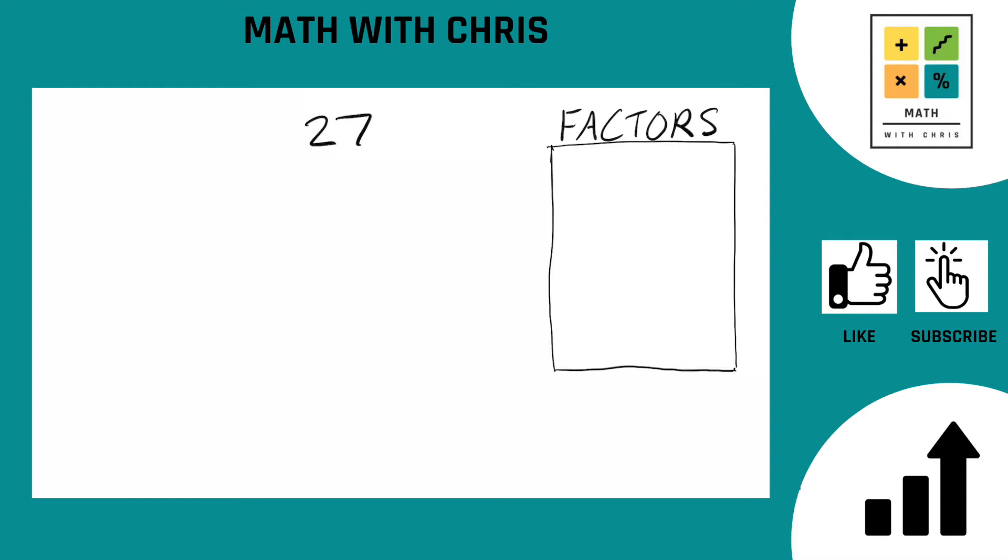Alright, what do we got here? Well, first thing we know to do is always to bank the two easiest factors, that's always 1 and the number itself, in this case 27.